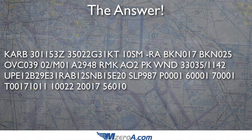P is the precipitation that's fallen in the past hour. Split the difference and add a decimal point: 0.01 inches of precipitation have fallen in the last hour — hence the light rain; it's very light, borderline mist. The six group means precipitation fallen in the past six hours: again, 0.01 inches. The seven group means precipitation in the past 24 hours — how they get that from a seven, I don't know, but split the difference: 0.01 inches in the past 24 hours.